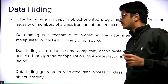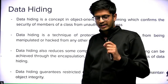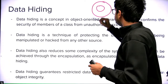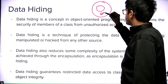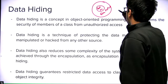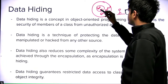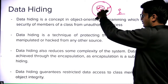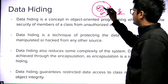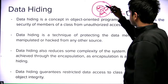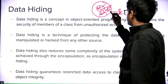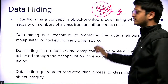What is data hiding? Whenever we talk about encapsulation, data hiding, abstraction, just remember this diagram — this capsule. We have some data and some methods here. The outside world cannot see this data and methods; they are not visible to the outside world. They can only access this particular data and methods through certain exposed methods.